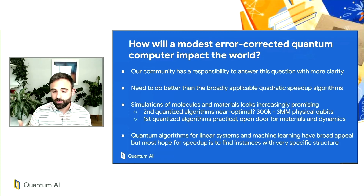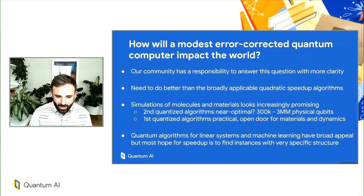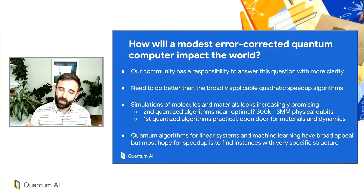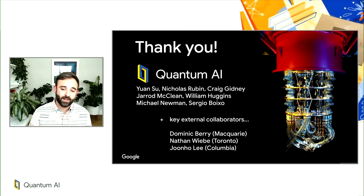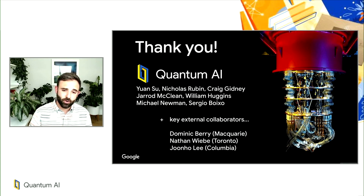Quantum algorithms for linear systems and machine learning seem to have very broad appeal, and everyone can think of problems in machine learning and linear algebra that apply to them. But the best hope for a speedup there is to find instances with a very specific structure, which may limit some of the impact of those algorithms. Nonetheless, we'll still keep searching. Thank you all for your time. I want to thank the whole quantum AI team, especially Yuan Su, Nicholas Rubin, Craig Gidney, Jared McLean, William Huggins, Michael Newman, and Sergio Boixo, who contributed a lot to this research, as well as key external collaborators Dominic Berry, Nathan Wiebe, and Jun Ho Lee. Thank you.